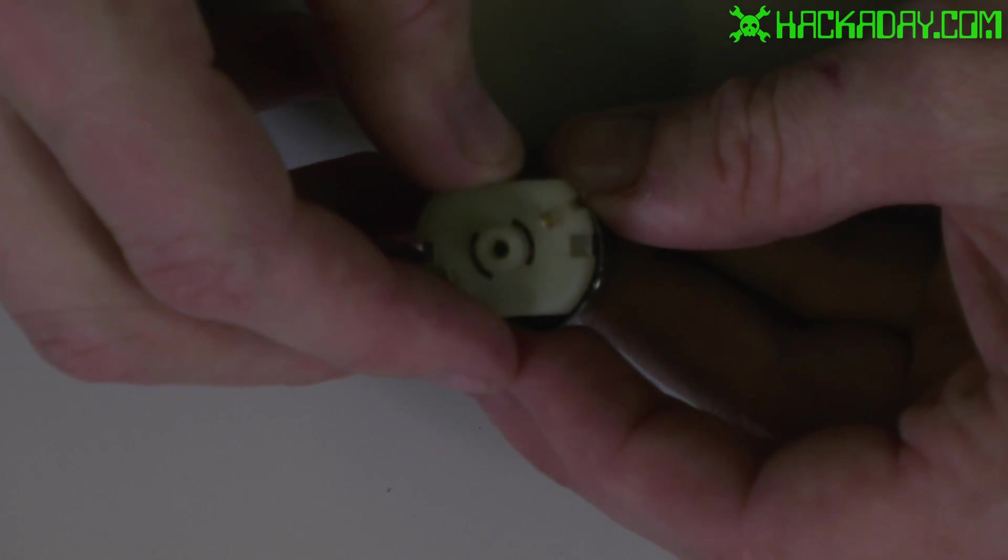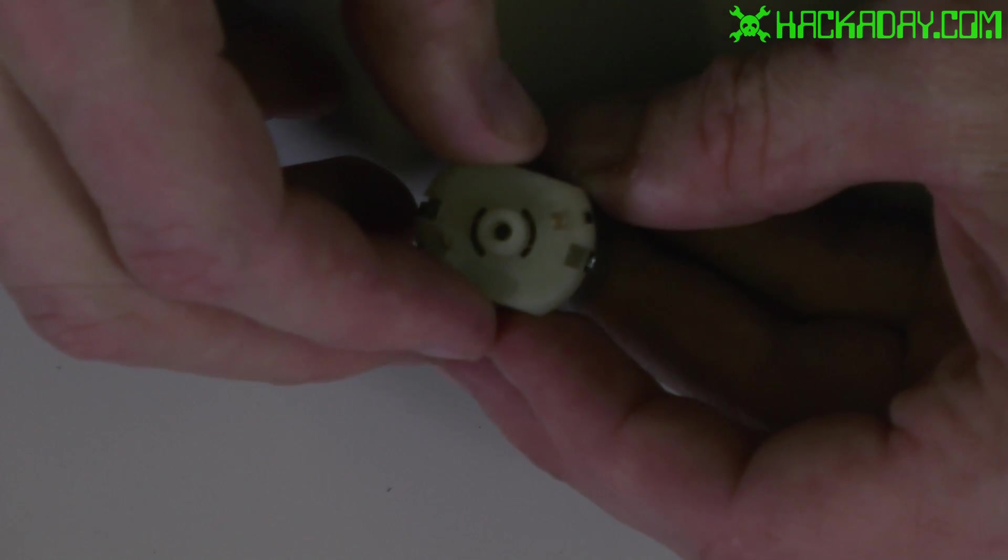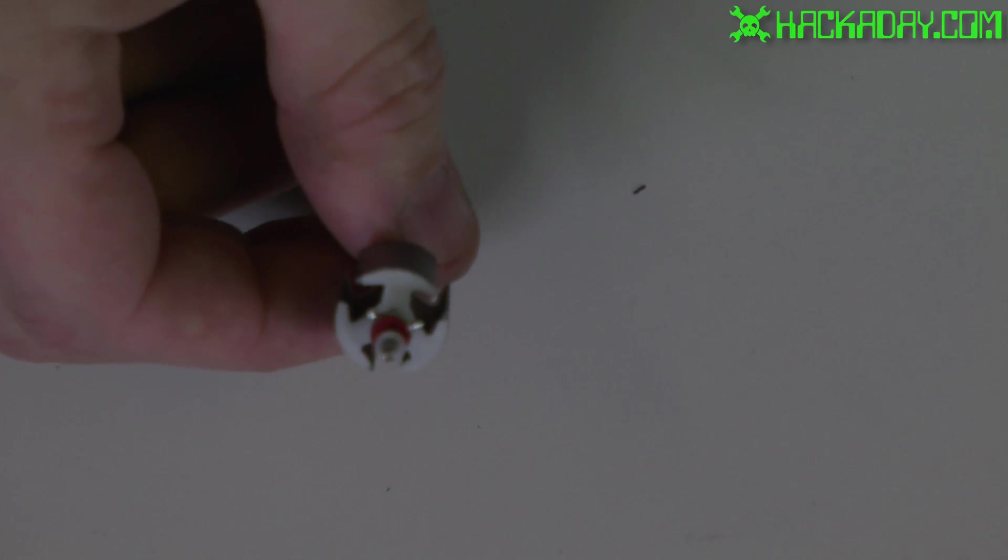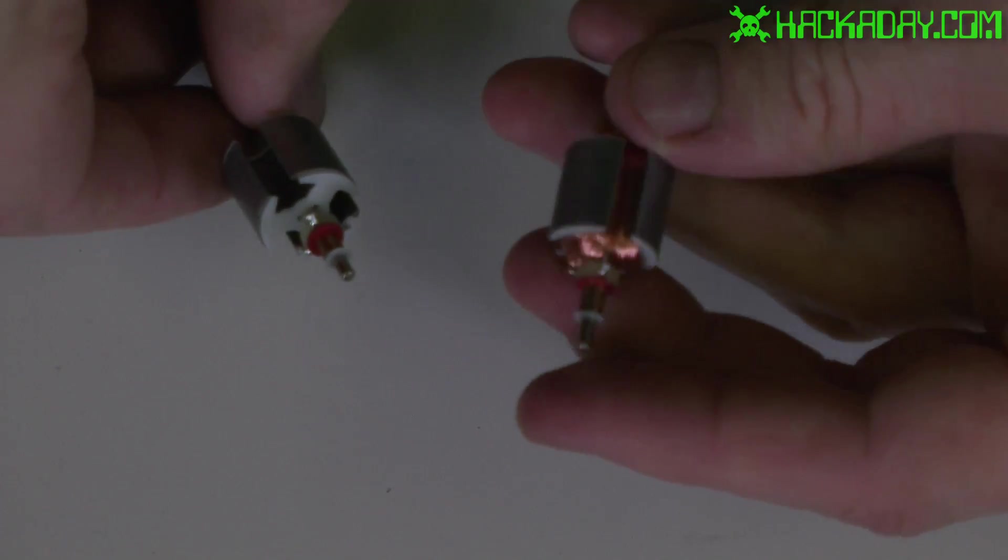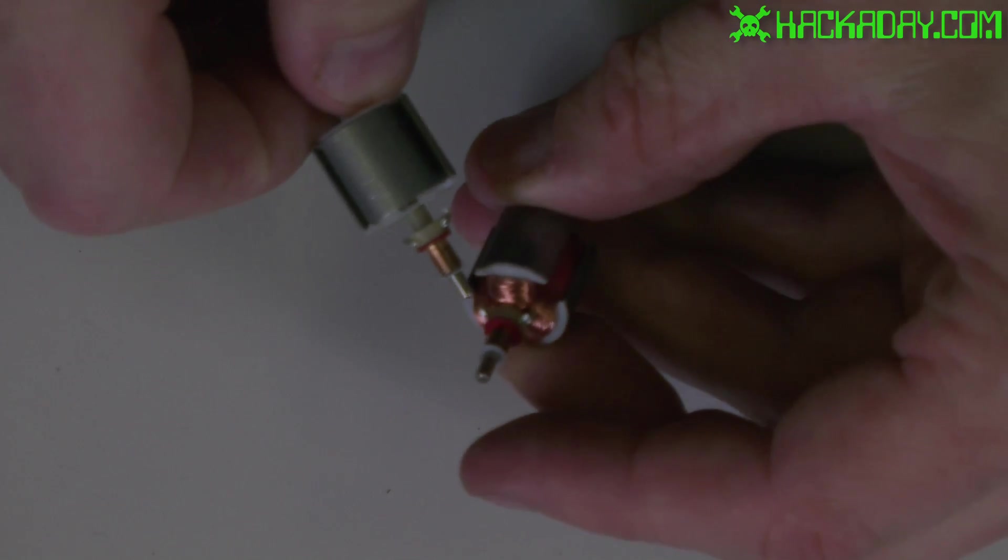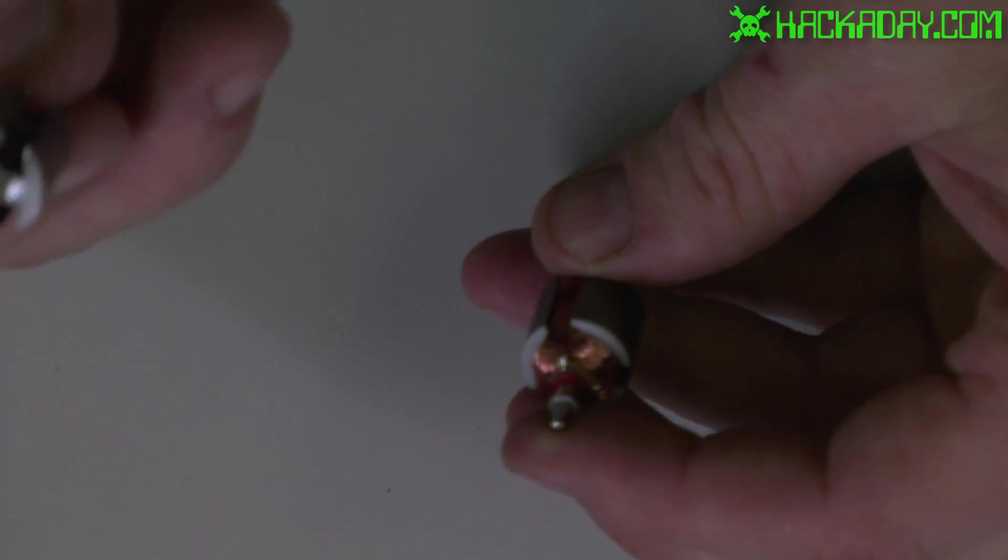If it has neutral timing it will spin equally fast in both directions. I'm going to rewind a motor today. As you can see in this motor it has extremely fine wire in here, something like a 28 or 30 gauge wire.